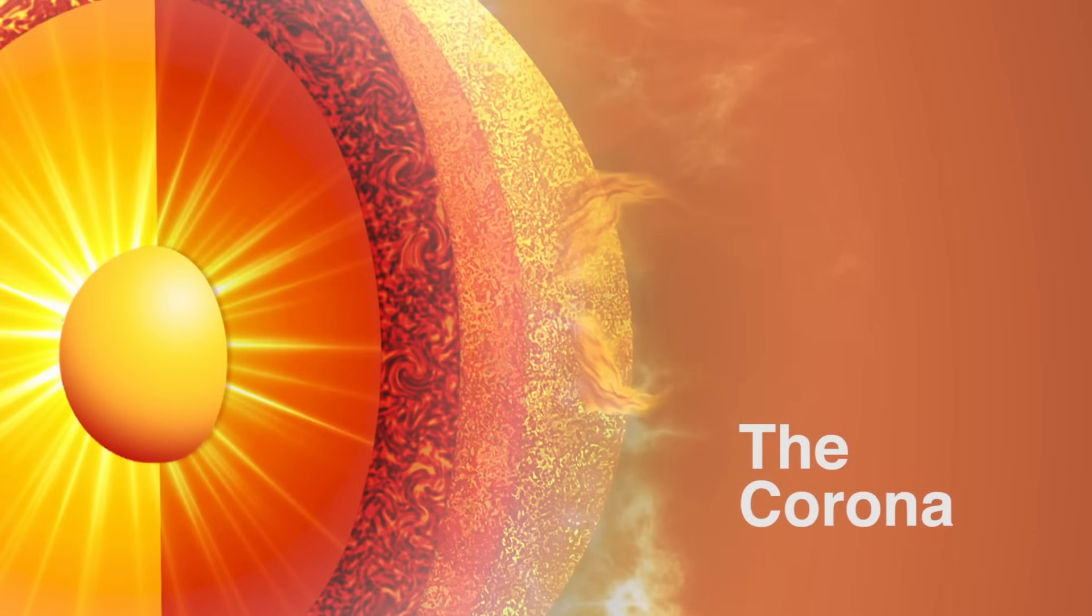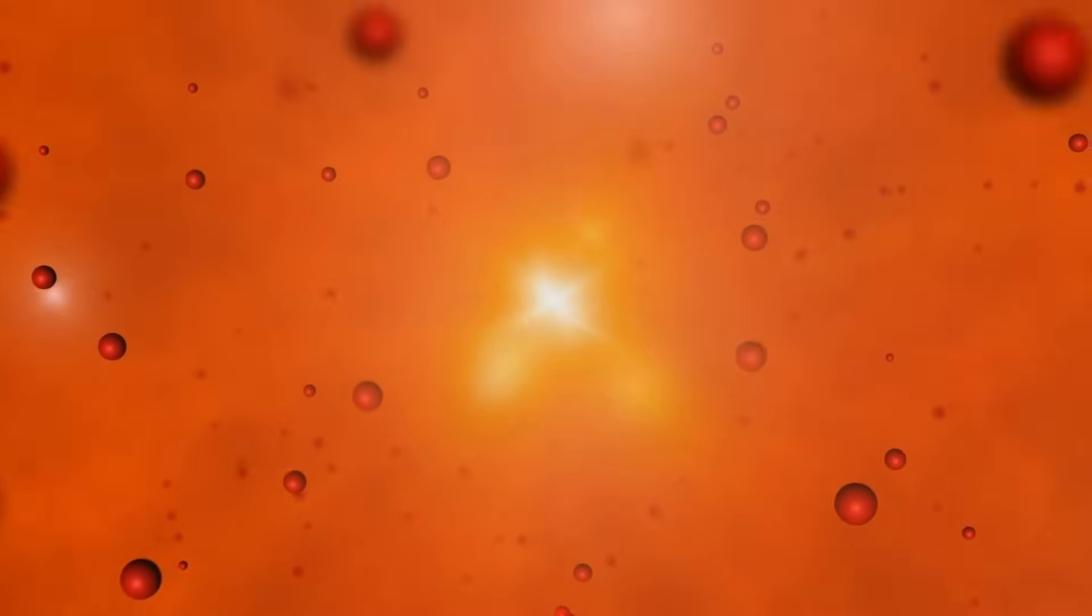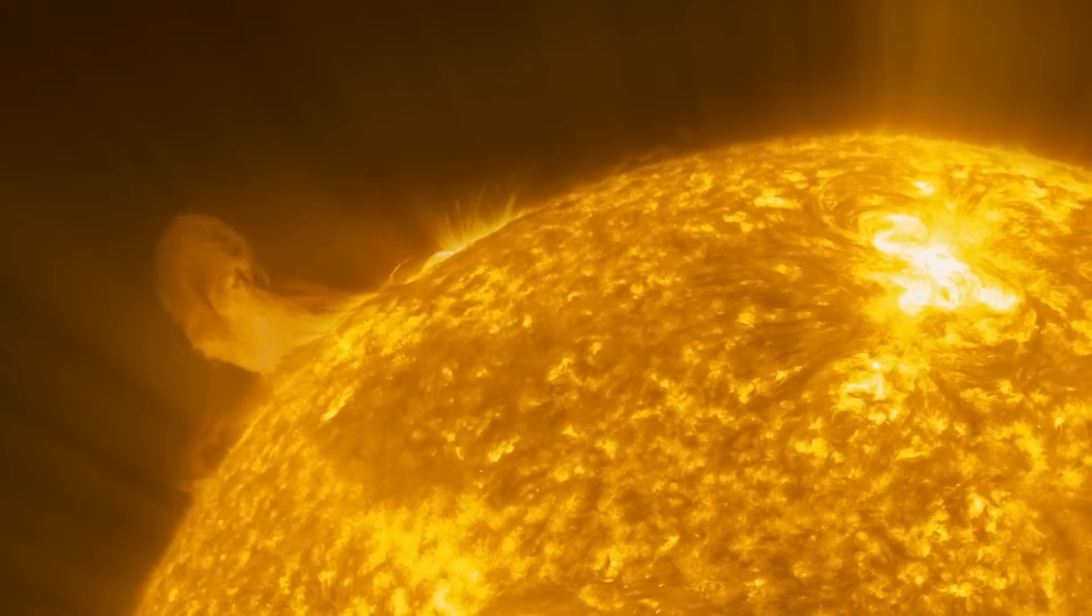One of the mission's primary objectives is to unravel the mystery of why the sun's corona—its outer atmosphere—is significantly hotter than its surface, a question that has plagued scientists for decades. By venturing into regions of the corona never before explored, the Parker Solar Probe aims to provide data that could answer long-standing questions about solar physics and improve our ability to predict space weather events that can impact Earth's technological infrastructure.